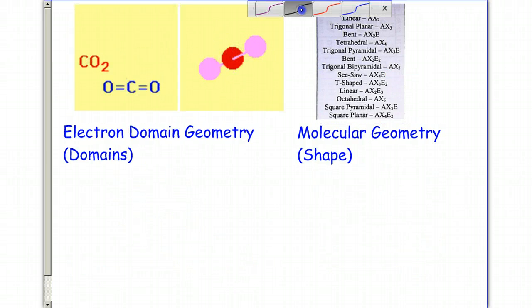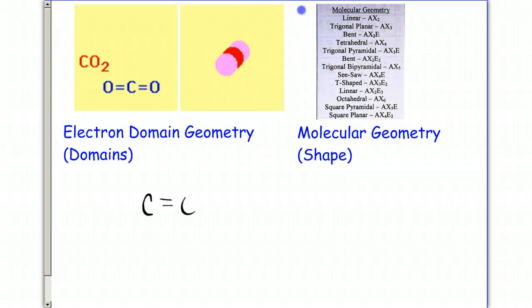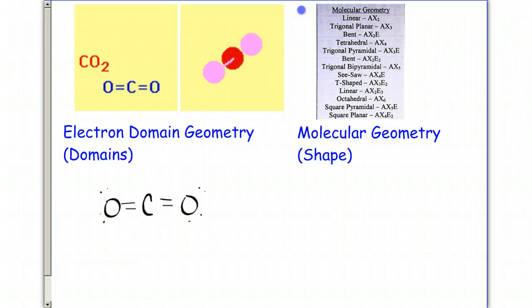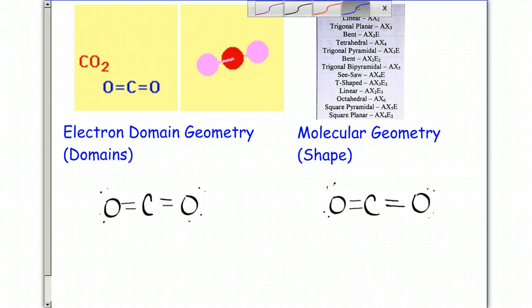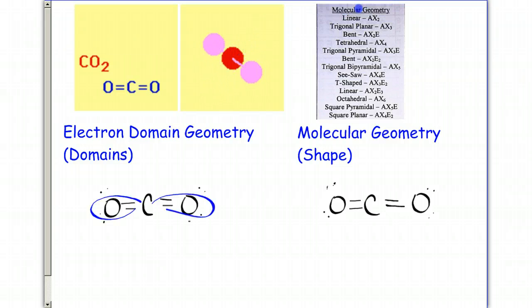For CO2, even though lone pairs on oxygen aren't shown, remember all atoms have an octet, so it's understood that they're there in order for the oxygens to have their eight valence electrons around them. For the electron domain geometry, around carbon we have one, two domains. Two domains is going to be labeled as linear.